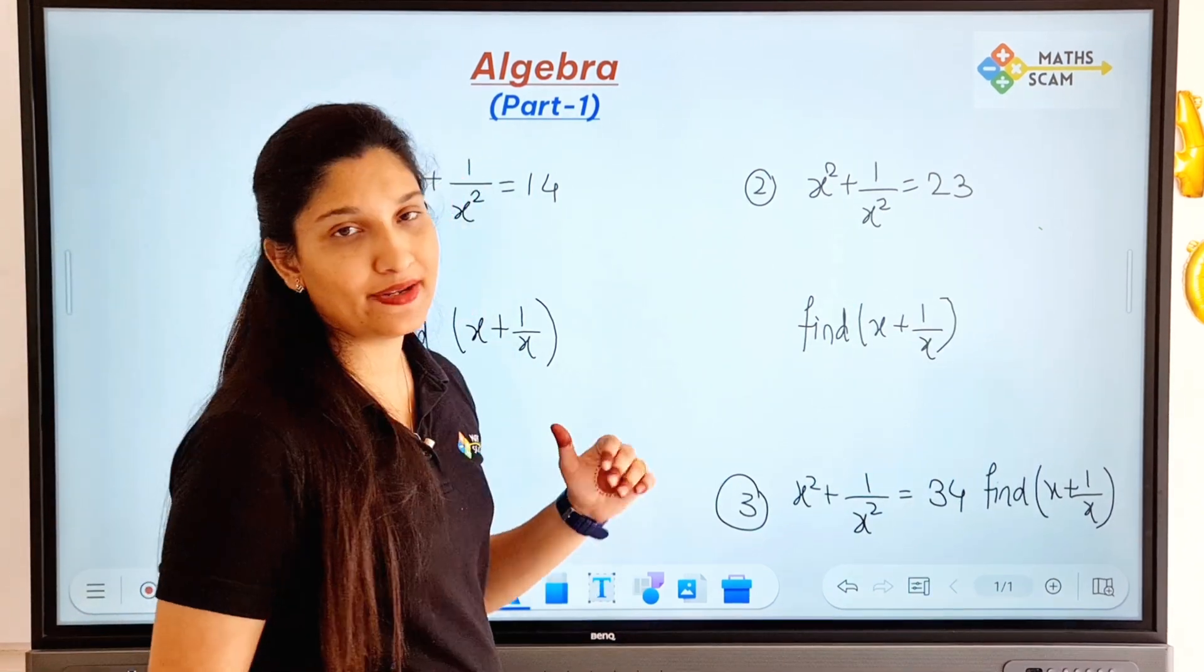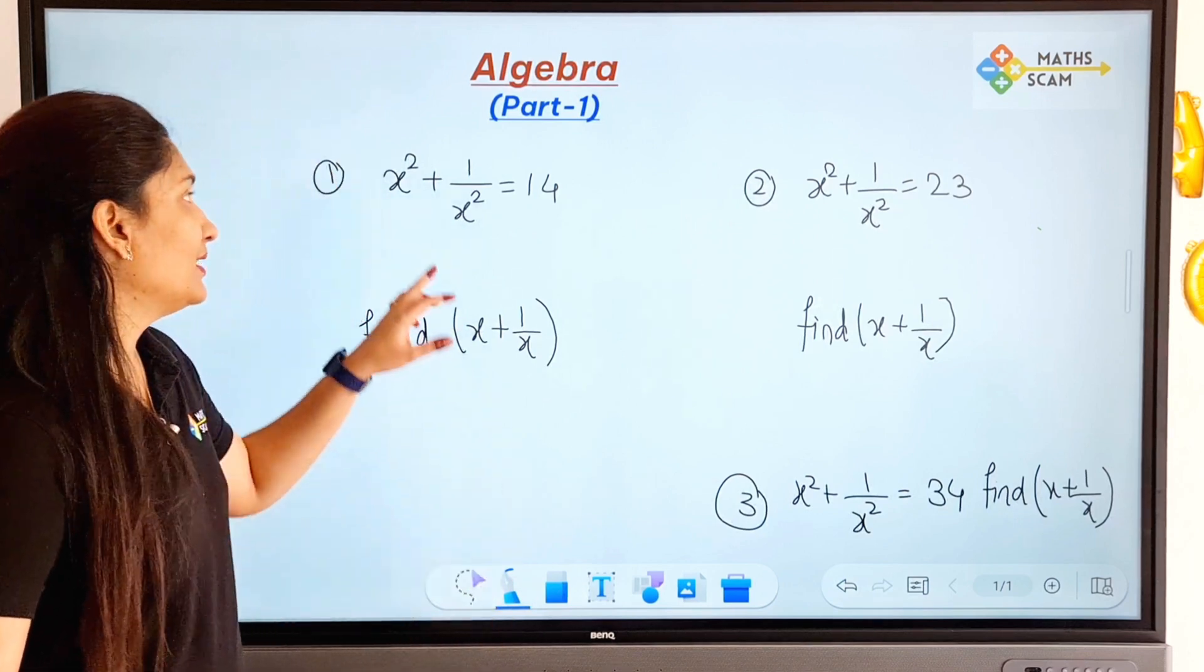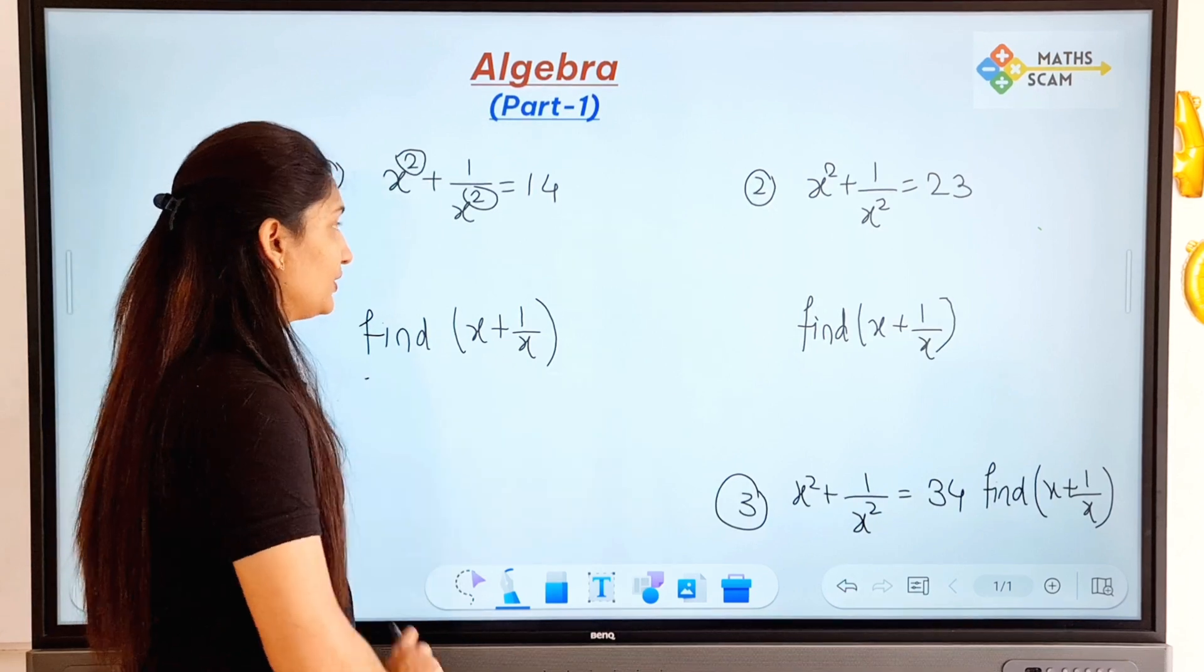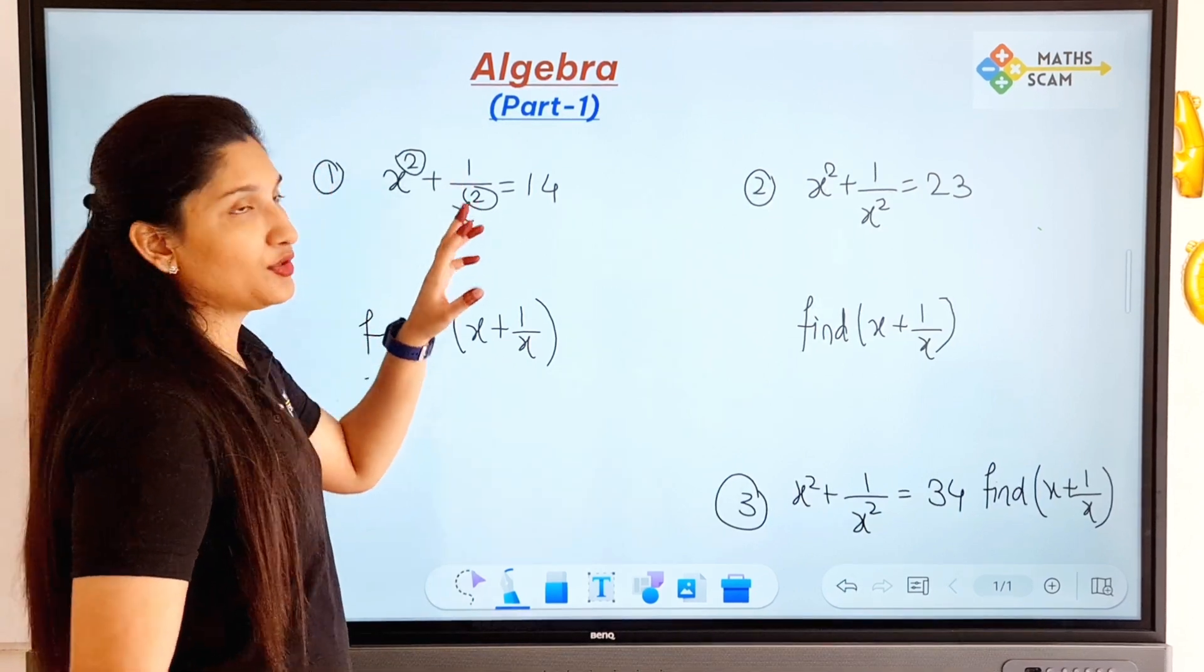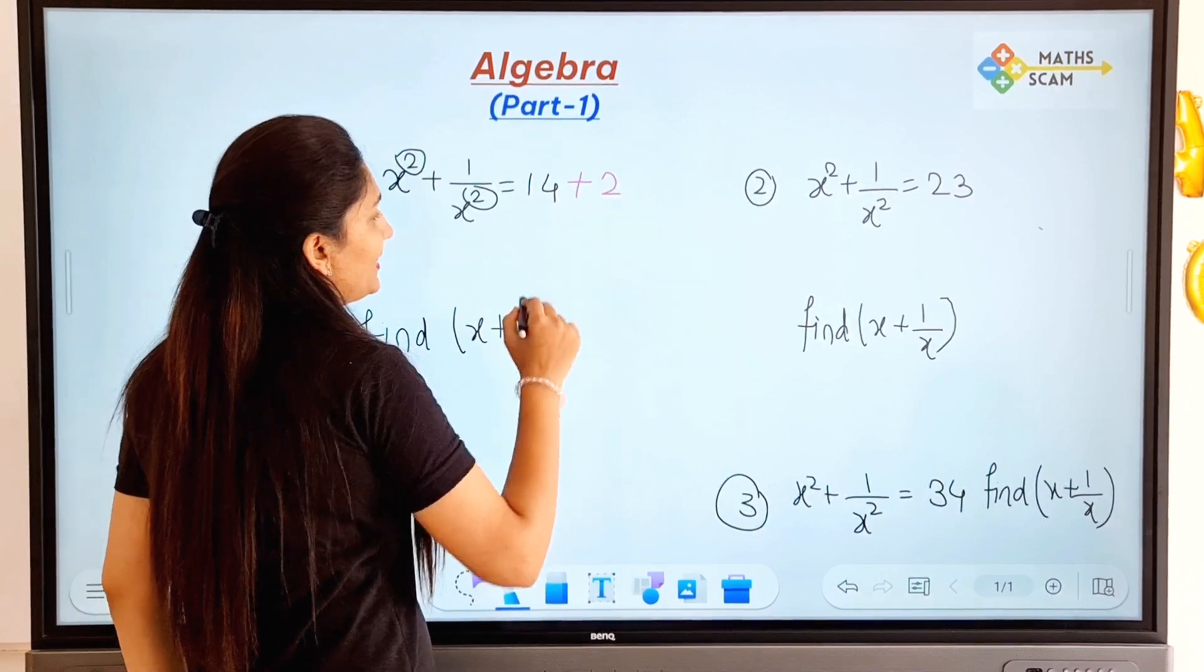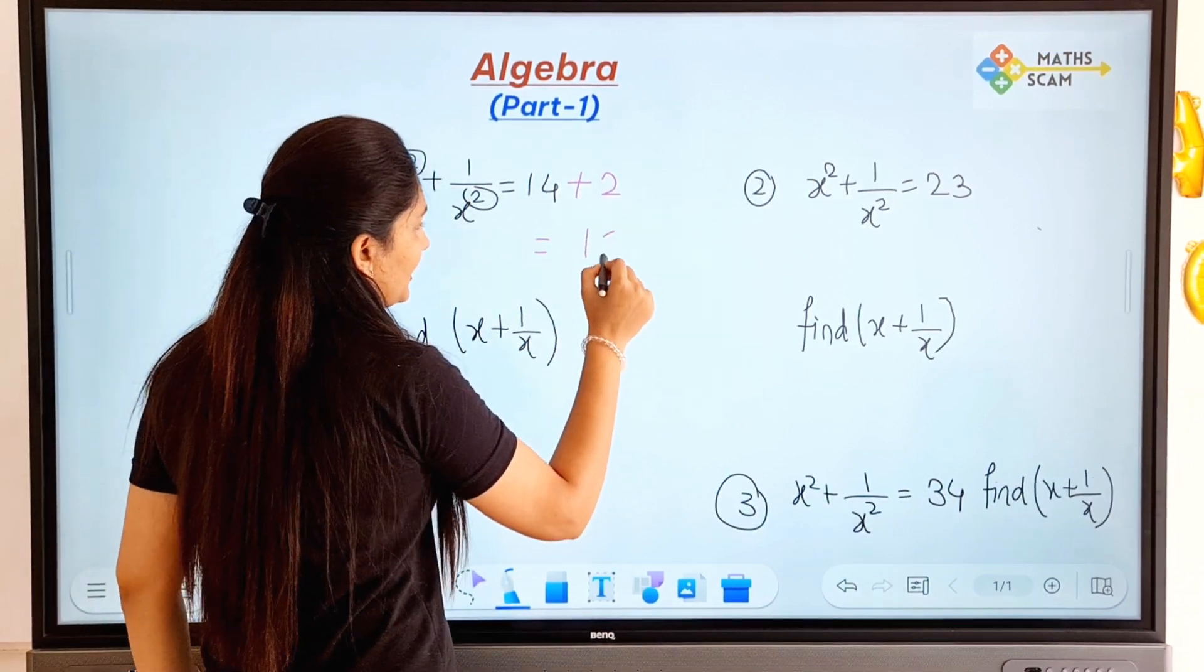Okay, don't write it down like 14 as it is. They have given the squares here, right. So what we are going to do is, we are just going to add 2 to the number 14. So 14 plus 2 is 16, okay.